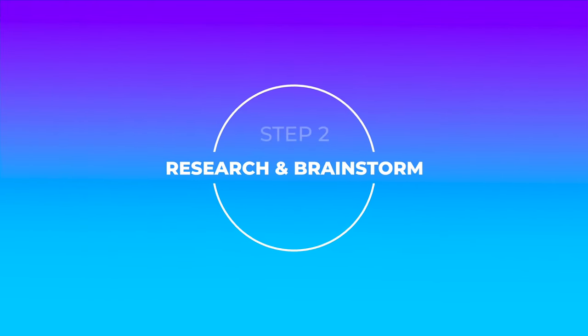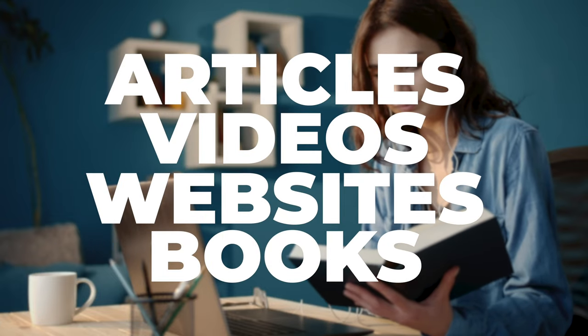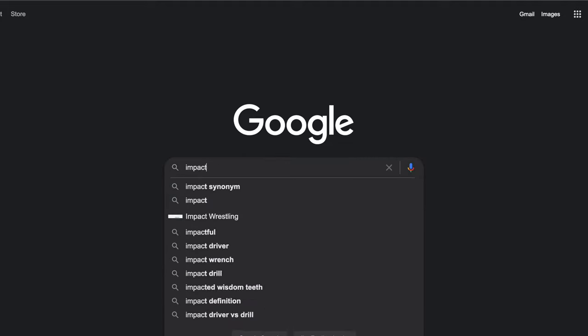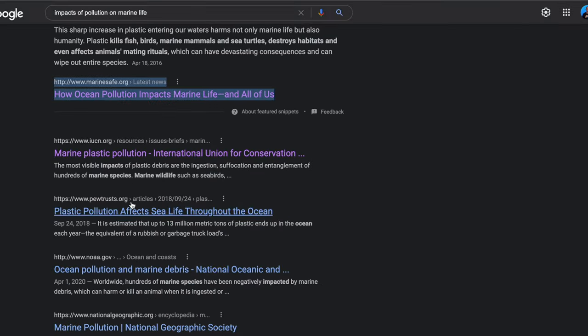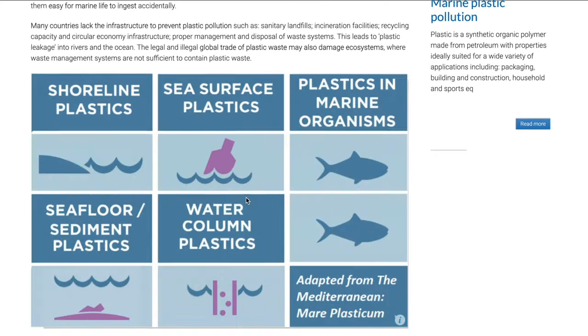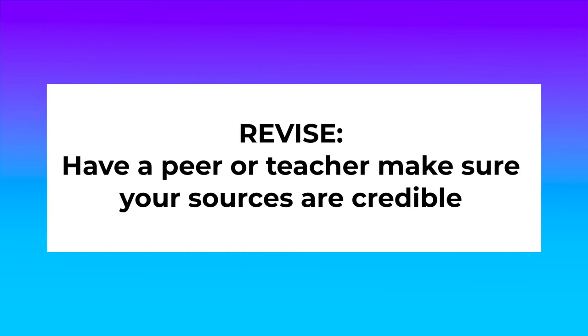Step two: research and brainstorm. In this step, you're trying to find the answer to your essay question. You want to read credible sources — basically articles, videos, websites, and books that you can prove are trustworthy and true. The goal is to gather ideas to answer your question. When you find an idea you like in a source, make sure you keep track of where you found it. Later, you'll need to cite that source to give credit to the author. As I conduct my research, I'm looking for all the major effects that pollution and trash have had on marine life, gathering evidence to back up my ideas. Remember, the writing process is cyclical — you continue to research throughout the entire process. Ask your peer or teacher to verify your ideas and make sure your sources are credible.